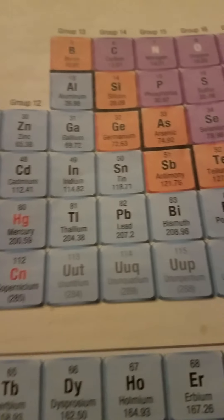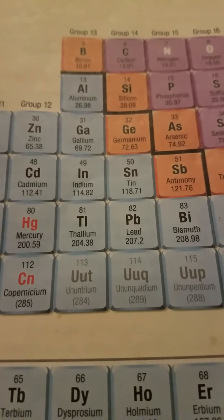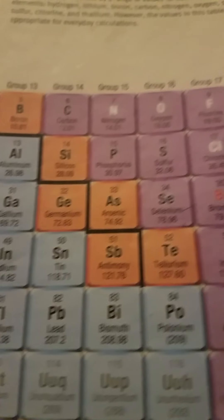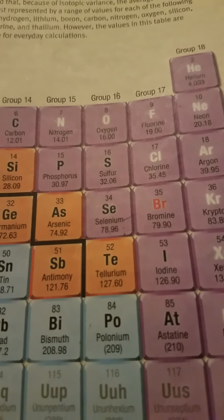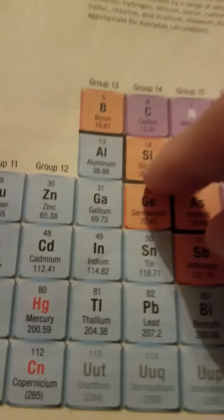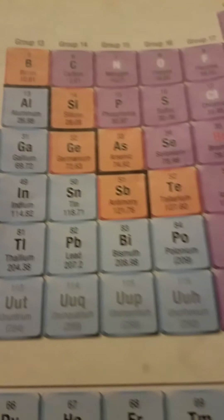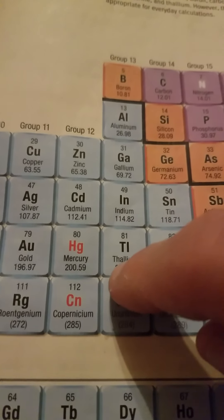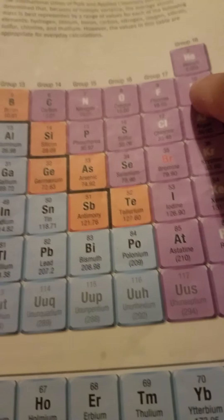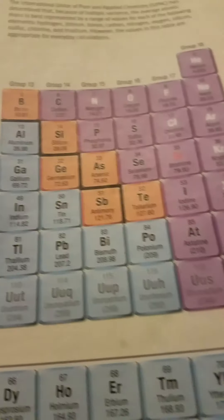If you look at the periodic table, you will see groups 13, 14, 15, 16, 17, and 18. All these groups starting at 13 - group 13, 14, 15, 16, 17, and 18, all here.